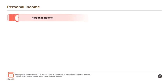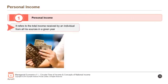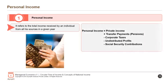The first concept is personal income. It refers to the total income received by an individual from all his sources in a given year. By formula: personal income equals private income plus transfer payments or pensions, minus corporate taxes, minus undistributed profits, minus social security contributions.